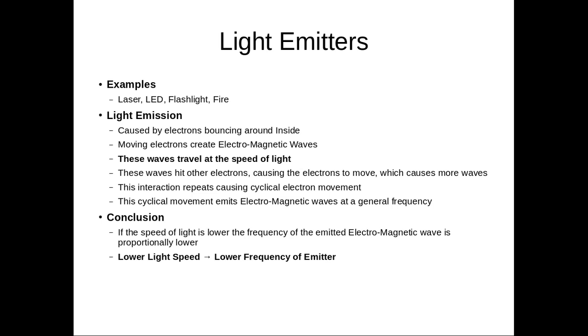These waves hit other electrons, causing electrons to move, which causes more waves. This interaction repeats, causing cyclical electron movement. The cyclical movement emits electromagnetic waves at a general frequency.